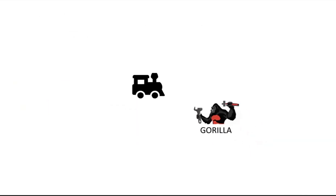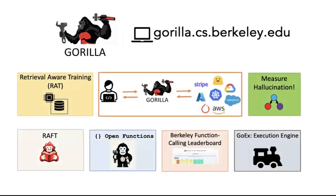GoEx is also open sourced, so you can check it out today. To conclude, I presented Gorilla, spoke about how to measure hallucination, and showed examples of the Berkeley Function Calling Leaderboard and the GoEx ecosystem. We also built a more general-purpose RAG setting which Deandre will be talking about next. Thank you very much.